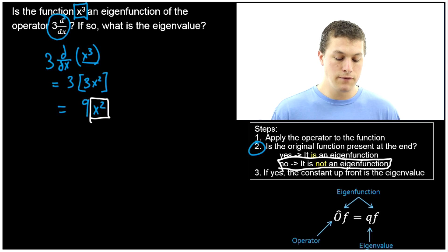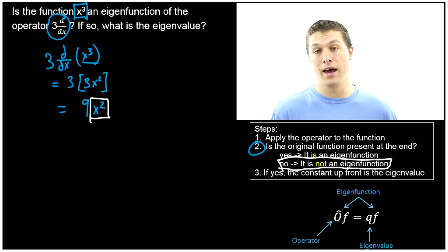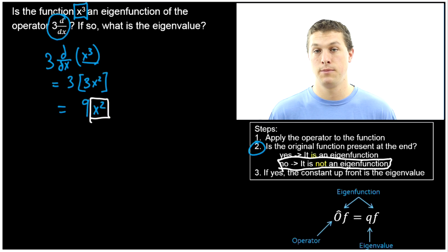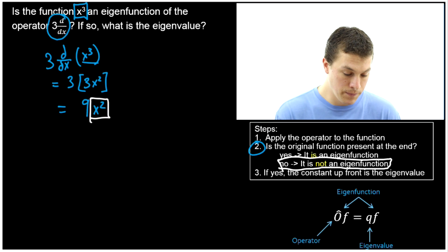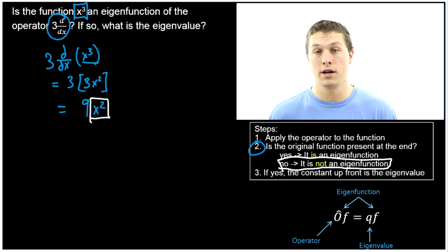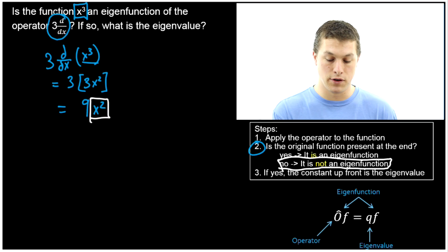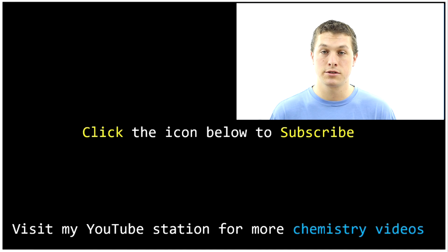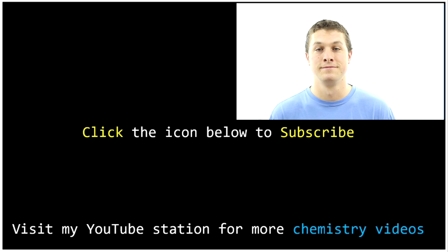Remember: an eigenfunction is something we can apply an operator to and get back that same exact function times some constant. If you get back a constant times that same function, you have an eigenvalue — it is that constant. That's an introduction to eigenfunctions and eigenvalues. Please ask any questions below, and subscribe by clicking on the Real Chemistry icon or visit my channel to see more videos. Thanks for watching.